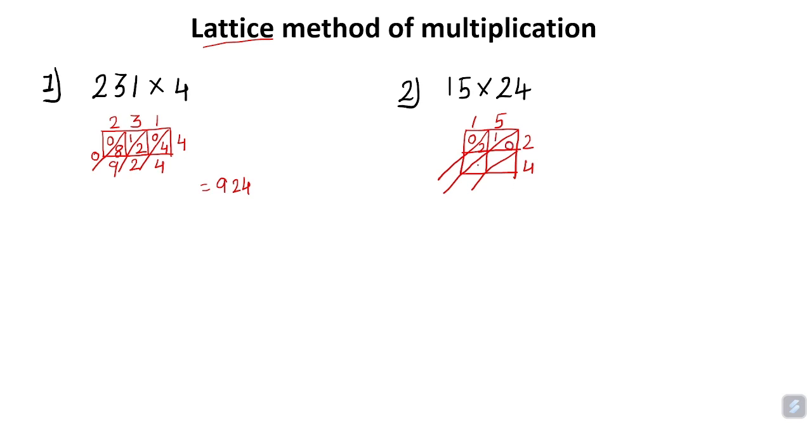Now in this box, on top is 1, beside is 4: 1 × 4 = 4, so I write 0, 4. In the last box, on top is 5, beside is 4: 5 × 4 = 20, so I write 2, 0.